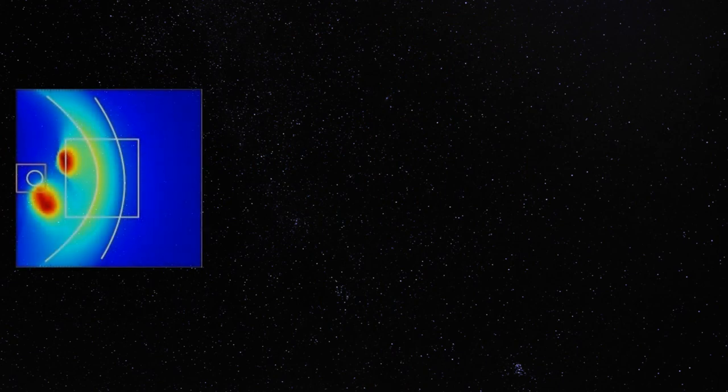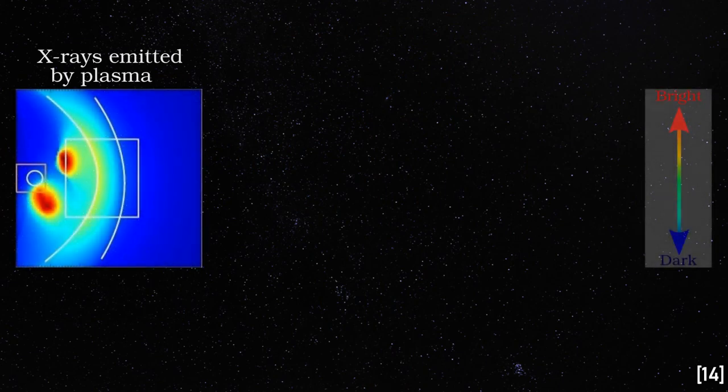Here is how SMILE might image the Earth's bow shock. On the left is a simulation of where the regions of plasma are around the Earth. The redder colors mean more plasma, emitting more X-rays. Suppose this simulation is accurate.